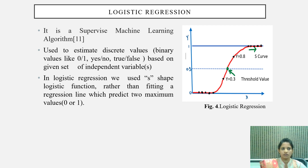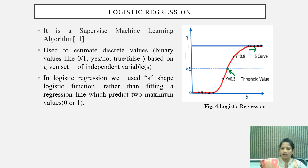Logistic regression is a supervised machine learning algorithm. It is used to estimate a discrete value based on a given set of independent variables. In logistic regression, we use a sigmoid logistic function rather than fitting a regression line, which predicts two maximum values, either 0 or 1.